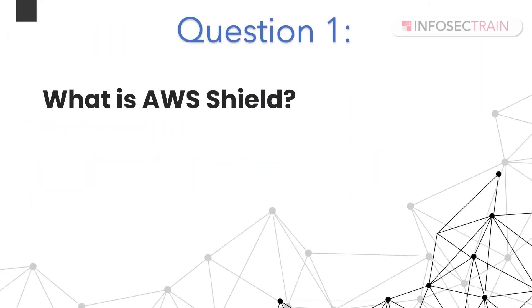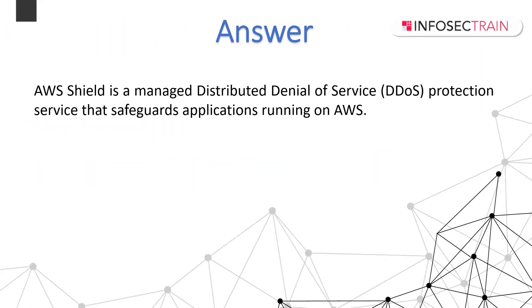What is AWS Shield? AWS Shield is used to protect or shield our application from DoS and DDoS attacks. AWS Shield Standard and Shield Advanced provide protection against Distributed Denial of Service (DDoS) attacks for AWS resources at the network and transport layer, that is Layer 3 and Layer 4.